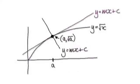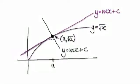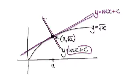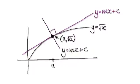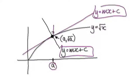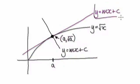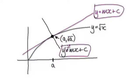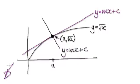Let's give you guys some practice. Here I've got a square root graph, and I want you to come up with the equation for the tangent line and the equation for the normal line. Remember, the normal line is always 90 degrees to the tangent line. Find the equation for the tangent line and the equation for the normal line at location A, where the coordinates at this point are (a, √a). Press pause and have a go.